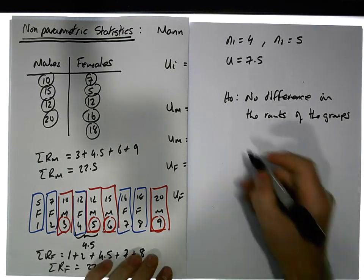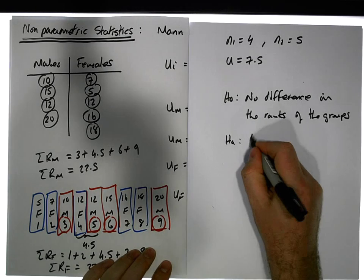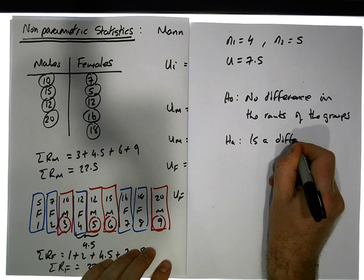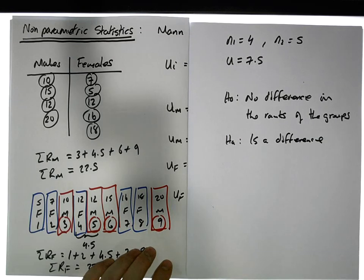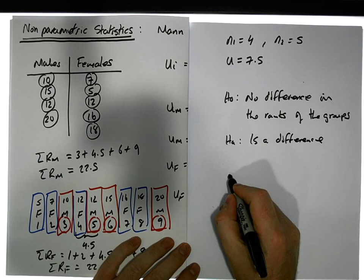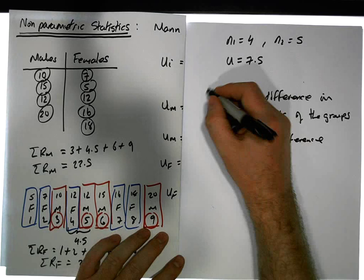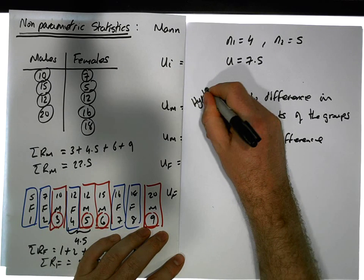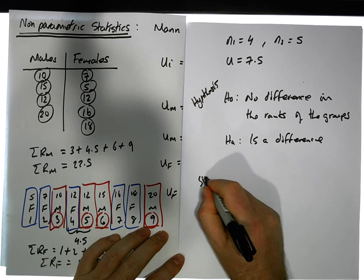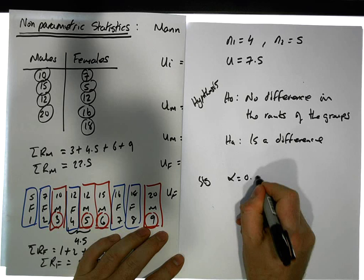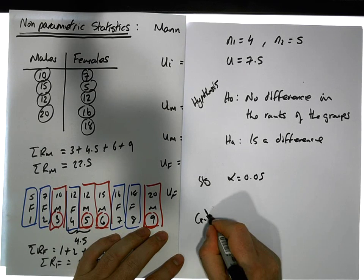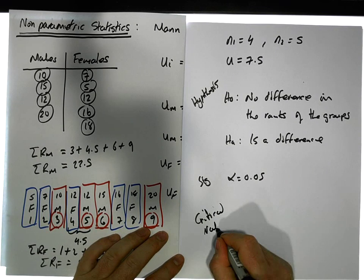And then the alternative is that there is a difference in the ranks. Our alpha value, the significance, is alpha equals 0.05.